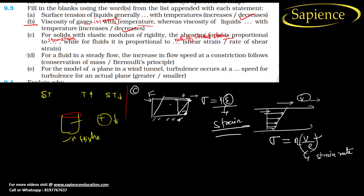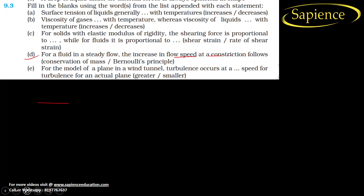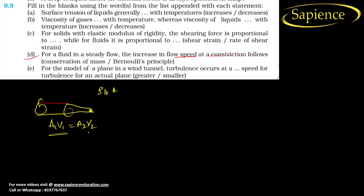Part d: for a fluid in steady flow, the increase in flow speed at a constriction follows conservation of mass. When area decreases at a constriction, mass must remain constant, giving us A1*V1 = A2*V2. This is the continuity equation based on conservation of mass.